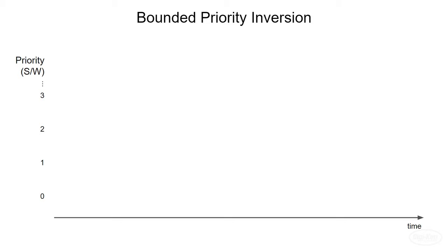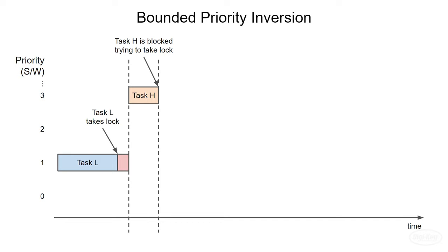A low-priority task, which I'll label task L, starts to run and then enters a critical section by taking a mutex or semaphore. A high-priority task, task H, interrupts task L and starts to run. At some point, this high-priority task tries to enter the same critical section. When it tries to take the mutex or semaphore, it will be blocked, as the lock is already held by task L.